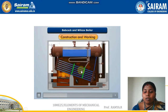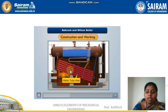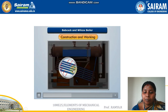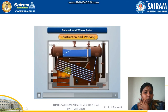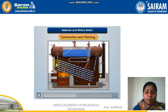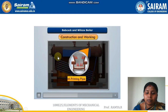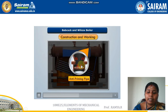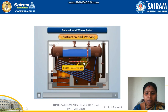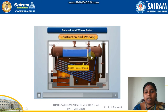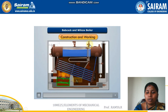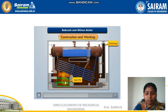Two baffle plates are placed between the water tubes, directing the hot flue gases in a zigzag path around the tubes. As the hot flue gases pass through the water tubes, steam is produced and sent via the uptake header to the anti-priming pipe. The steam then passes through the superheater tubes, where all water molecules are removed, producing dry superheated steam. This steam exits through the steam stop valve, and exhaust gases leave through the chimney.